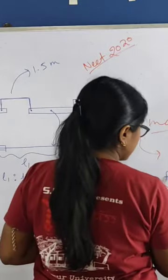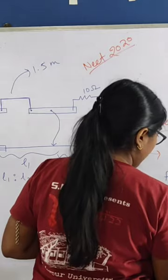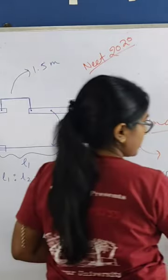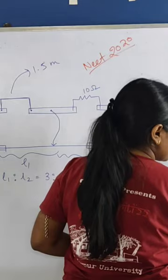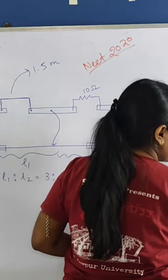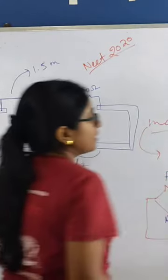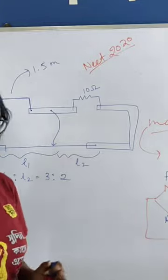This is the resistance P, this is Q, this is R, this is S. If the ratio of the resistance P and Q is equal to the ratio of the resistance R and S, then this is known as a balanced Western Bridge condition.